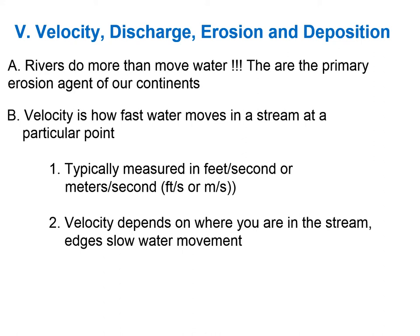Water slows down where it comes in contact with things. Along rocky banks, fallen trees, or roots sticking out, all those obstacles slow the water near the banks. Water movement tends to be slowest along the banks and along the river bed, and fastest in the middle of the river, away from the bottom and edges. Many streams also meander — winding side to side as they move downhill — and this meandering deflects water speed as well.